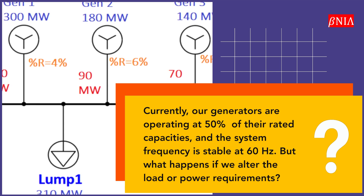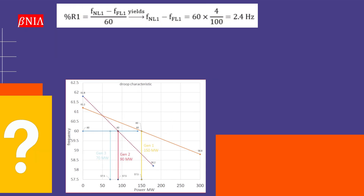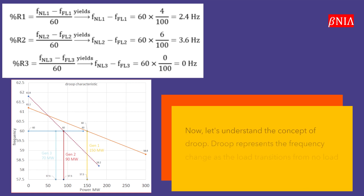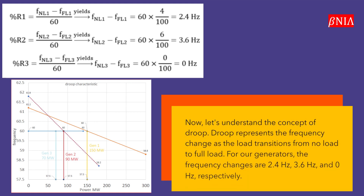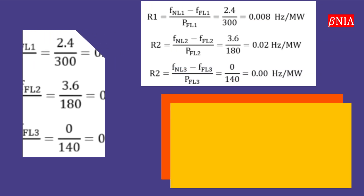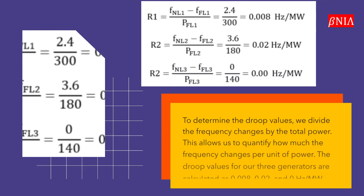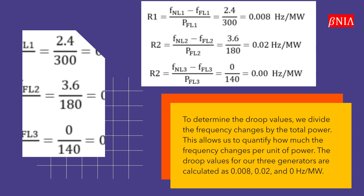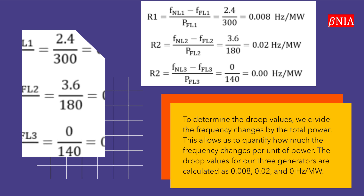But what happens if we alter the load or power requirements? Let's understand the concept of droop. Droop represents the frequency change as the load transitions from no load to full load. For our generators, the frequency changes are 2.4 Hz, 3.6 Hz, and 0 Hz, respectively. To determine the droop values, we divide the frequency changes by the total power. This allows us to quantify how much the frequency changes per unit of power.